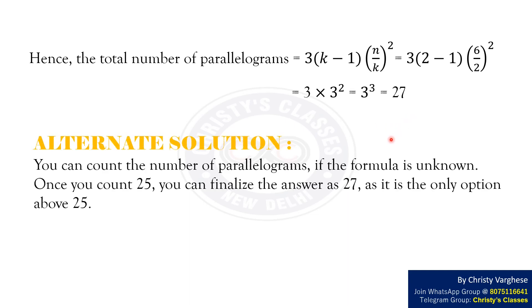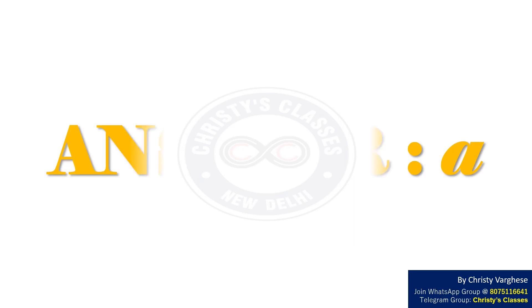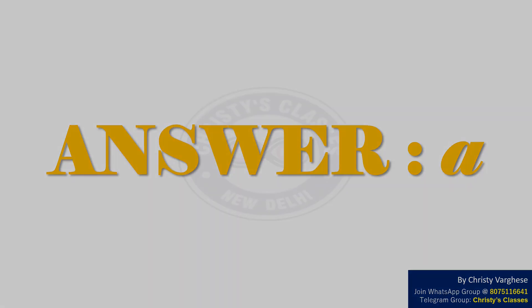As an alternate solution, you can count the number of parallelograms if the formula is unknown. Once you count 25, you can finalize the answer as 27 as it is the only option above 25. Thus, the right answer to the question is option A.